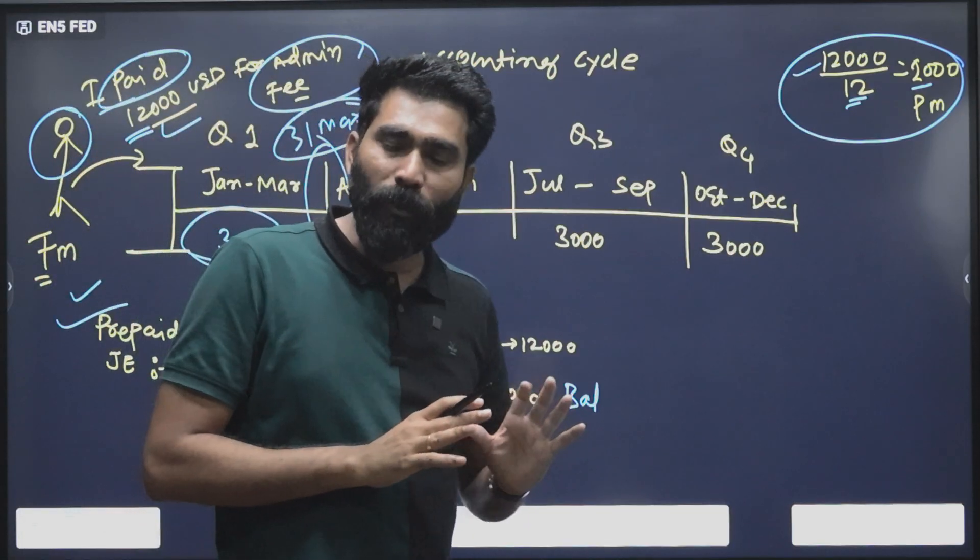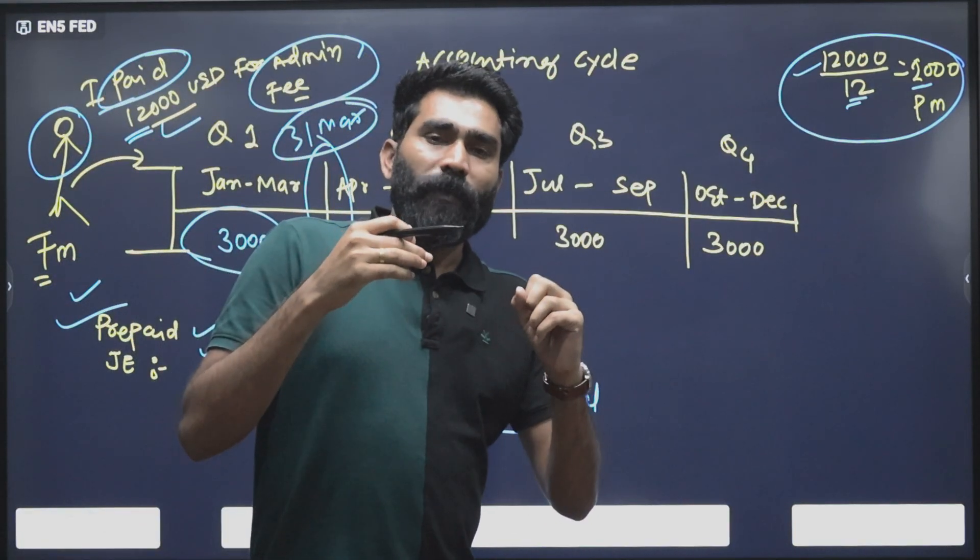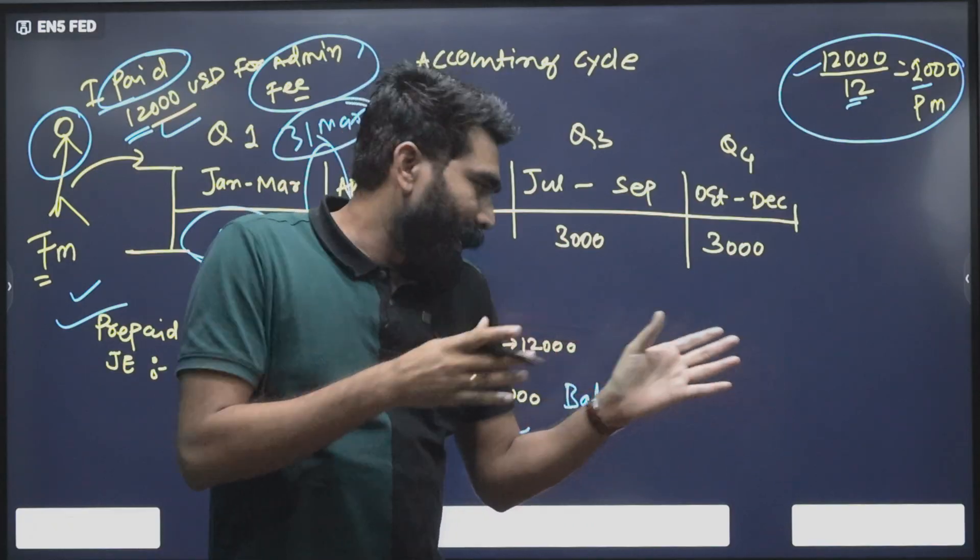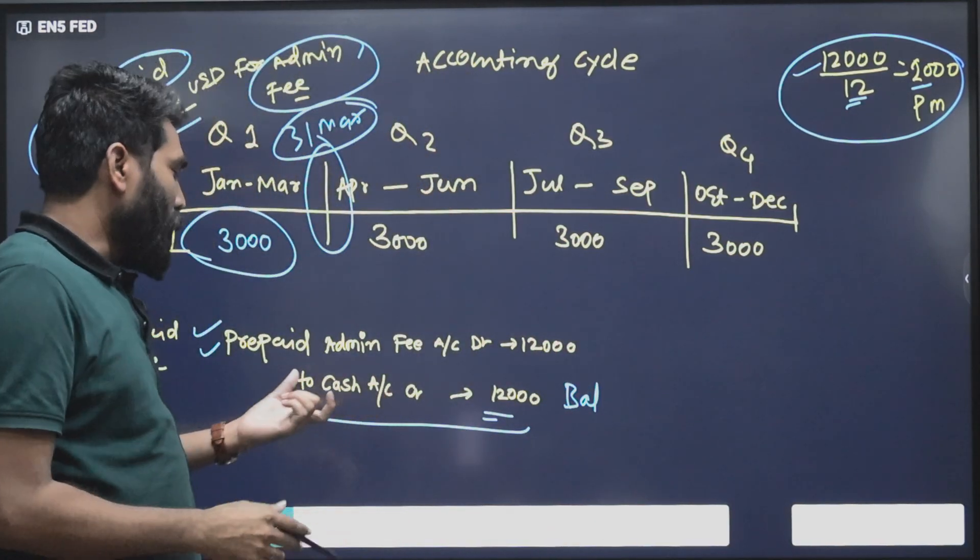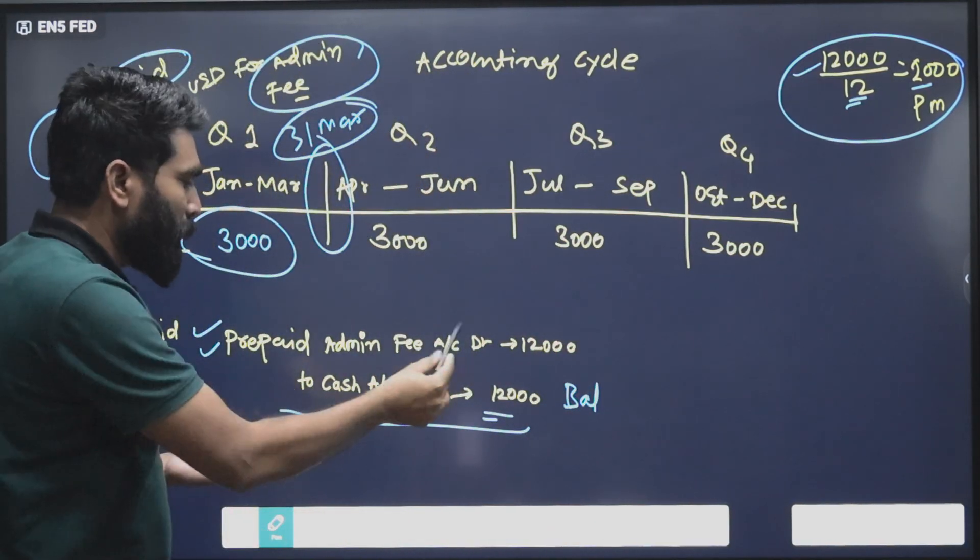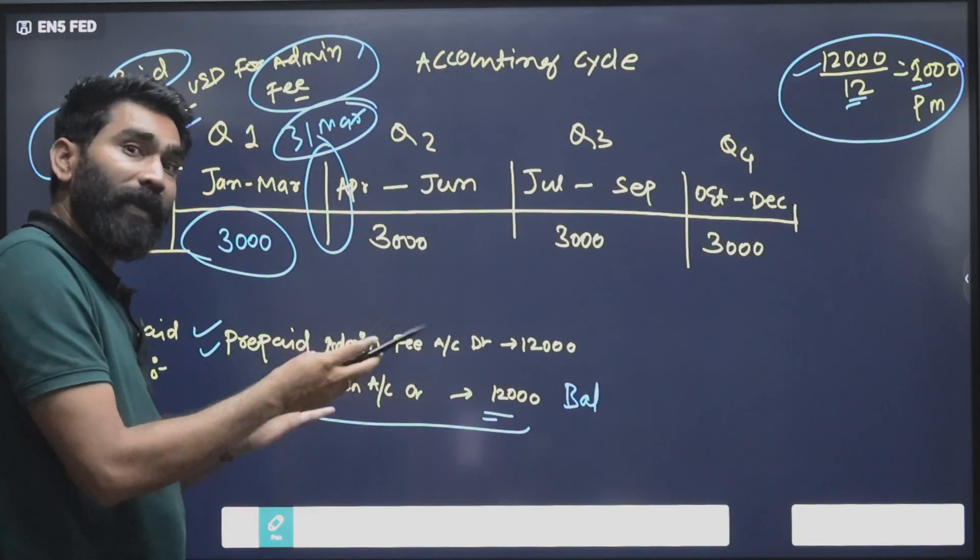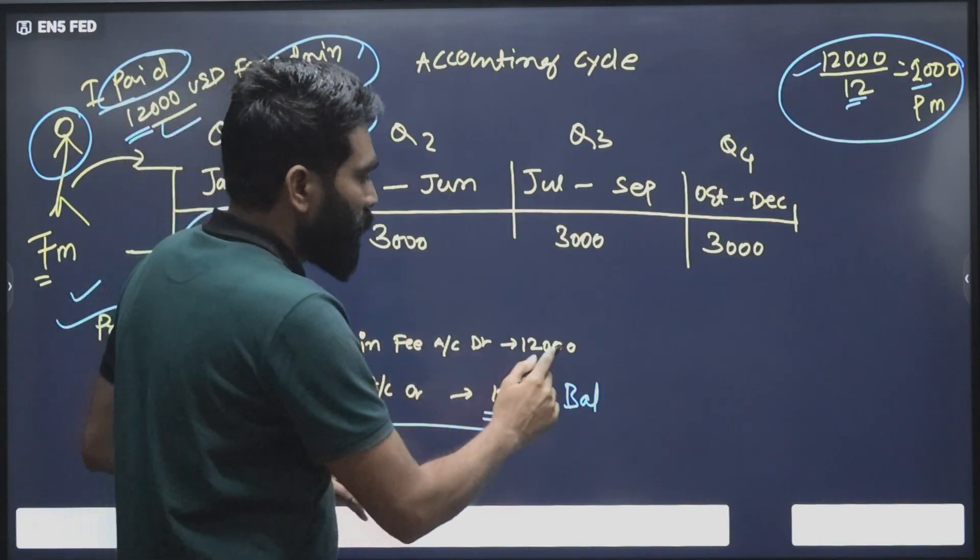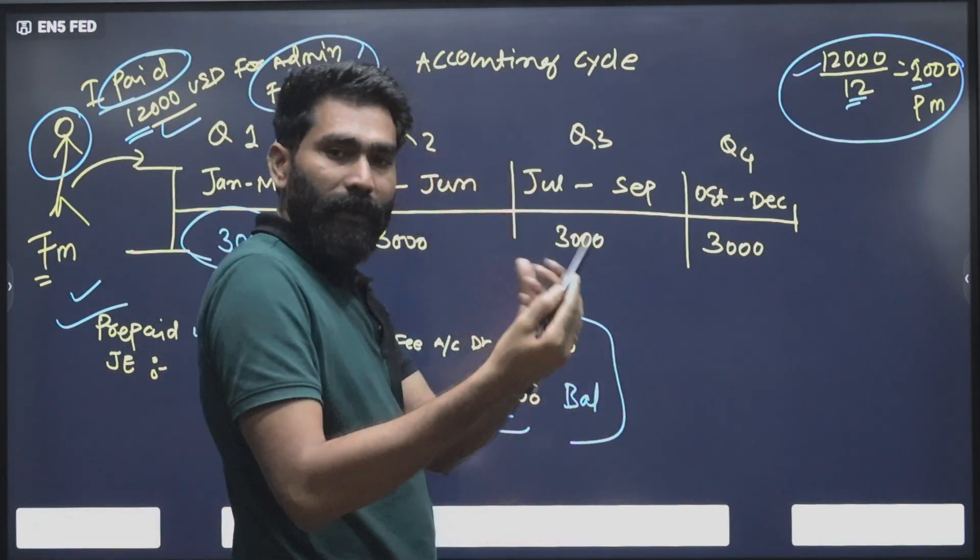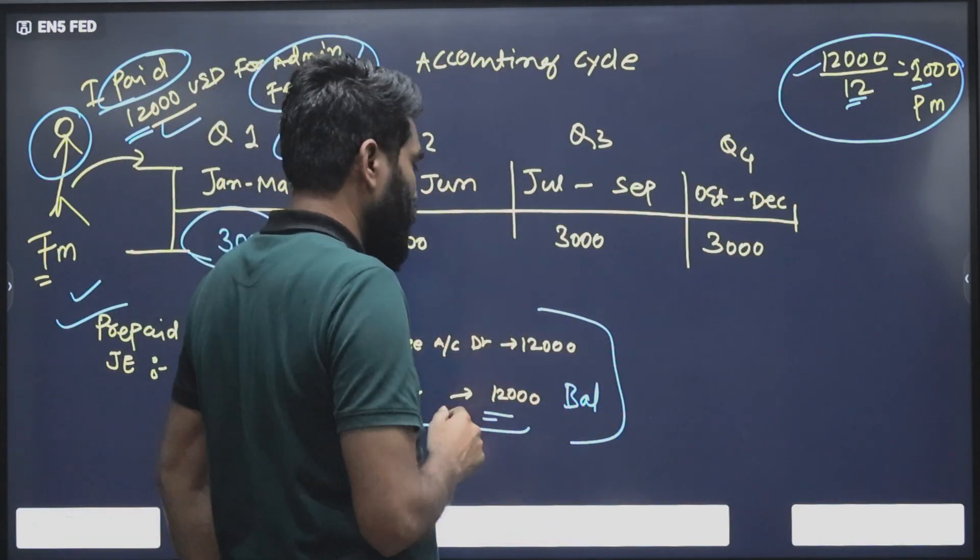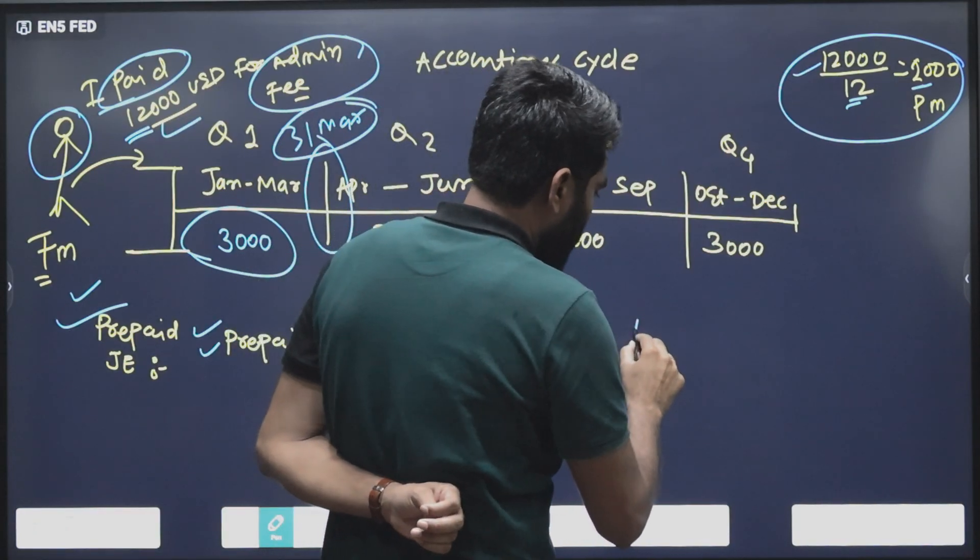On March 31st, since we have quarterly accounting, the accounting books will close down. In that case your accounting entry would be - now we cannot record the prepaid accounting account and cash entry again because we already recorded that when we paid it.